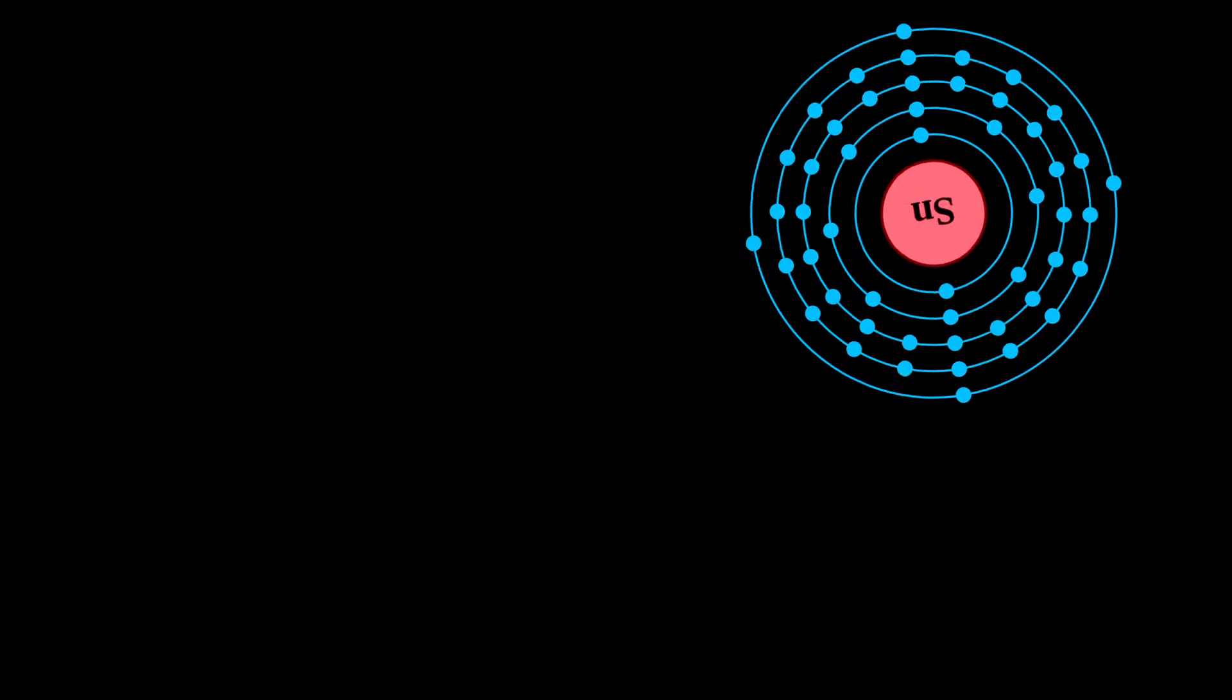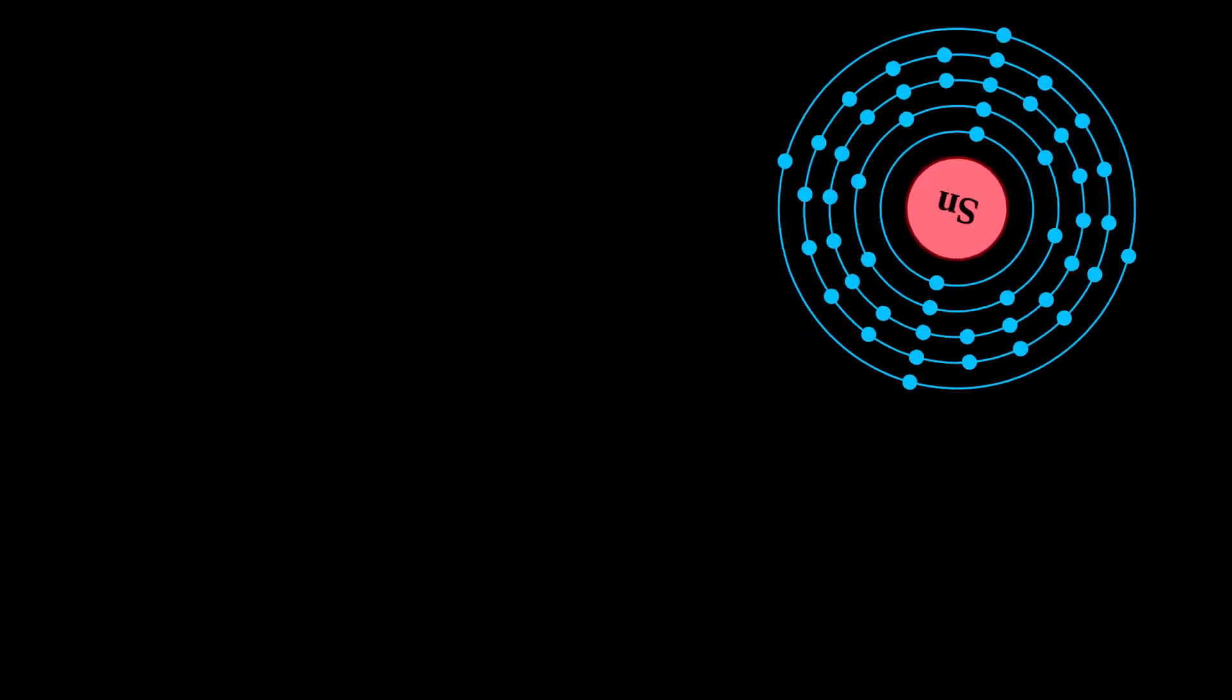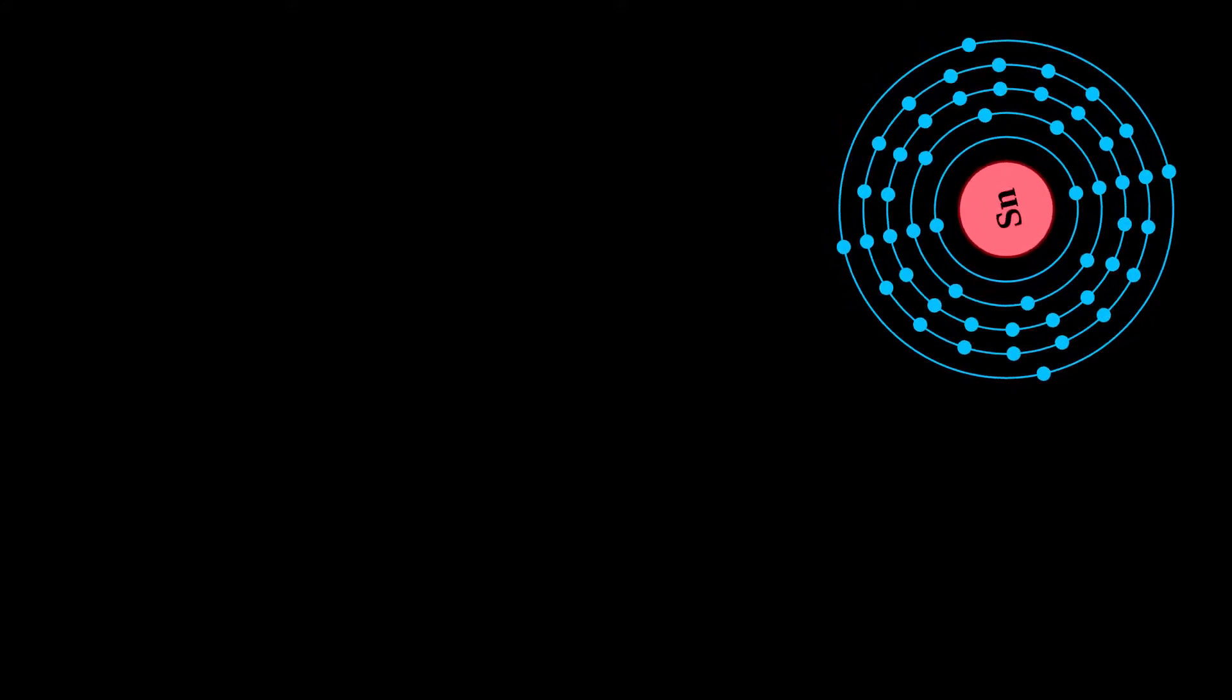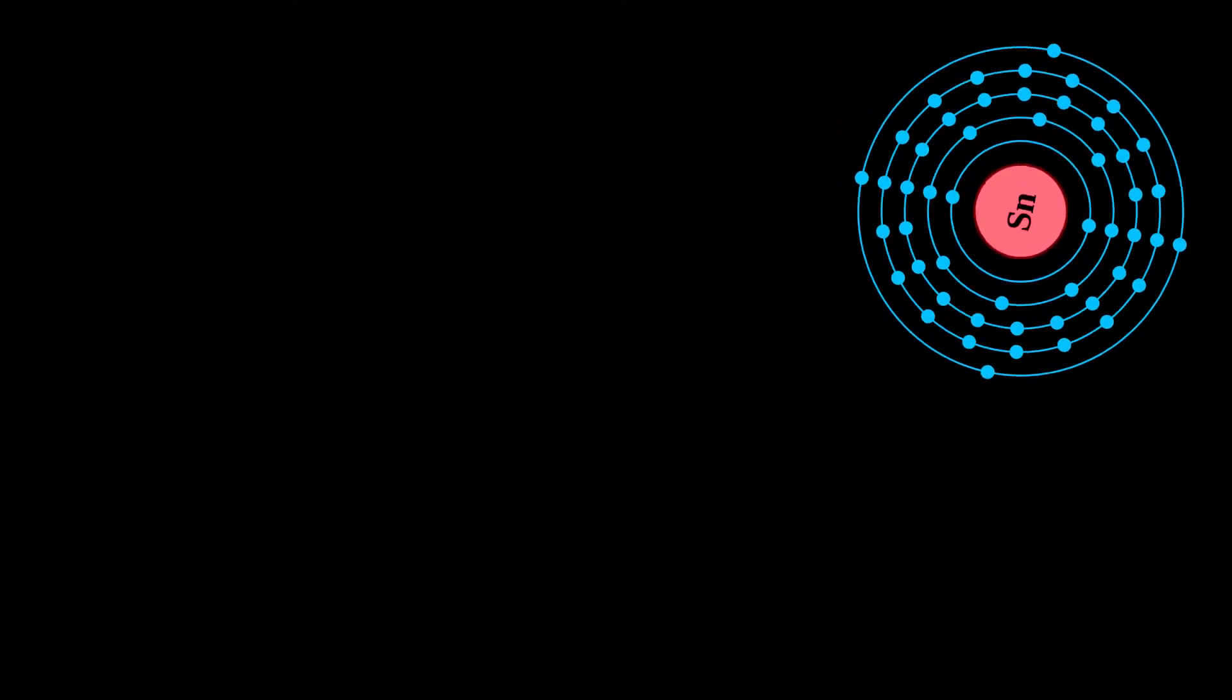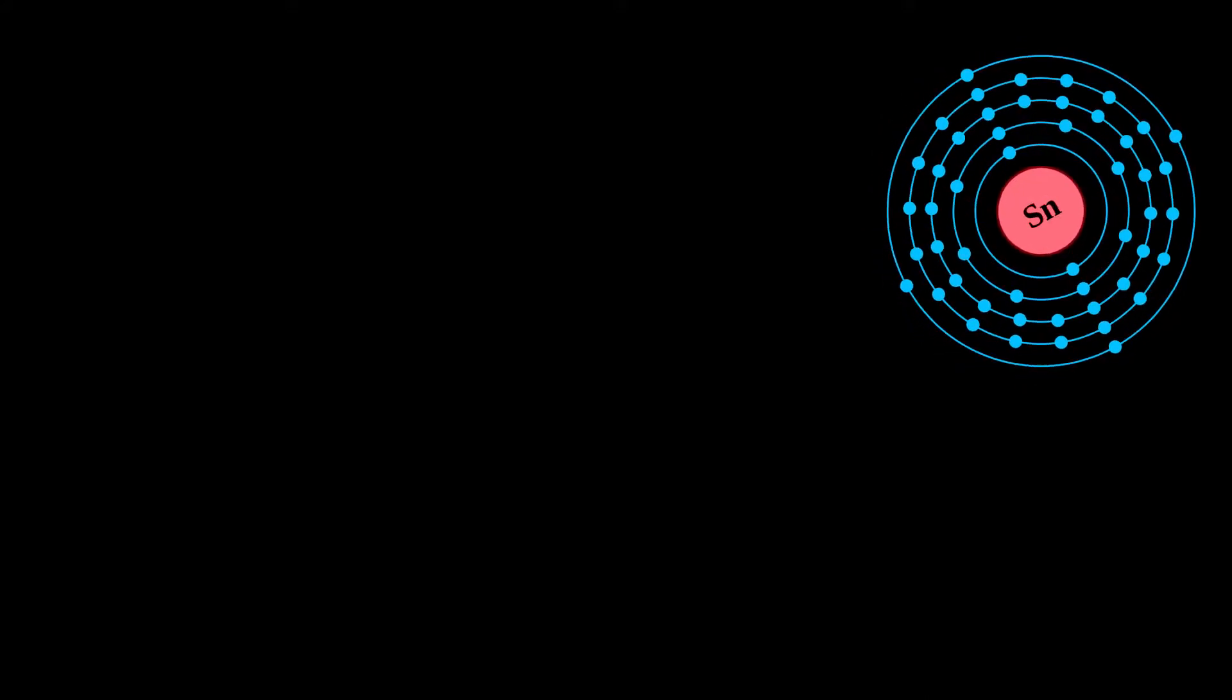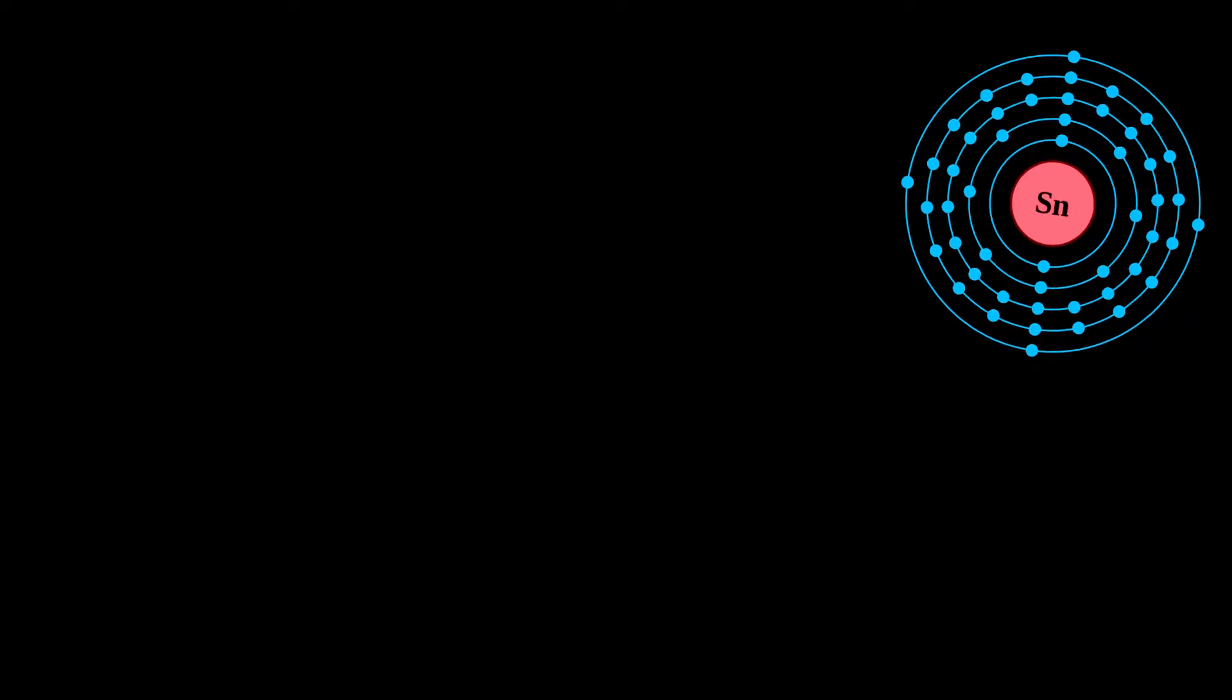It has two main allotropes at room temperature. The stable allotrope is beta-tin, a silvery white, malleable metal, but at low temperatures it transforms into the less dense gray tin, which has the diamond cubic structure. Metallic tin does not easily oxidize in air.